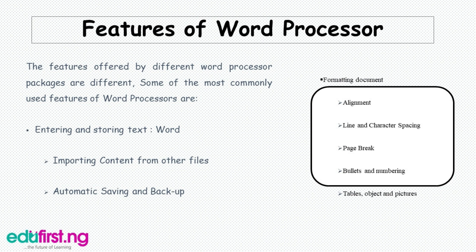The features offered by different word processor packages vary, but the most commonly used features include: entering and storing text — which includes importing text from other files, automatic saving, and backup — and formatting documents, which includes alignments, line and character spacing, page breaks, bullets and numbering, tables, objects, and pictures.